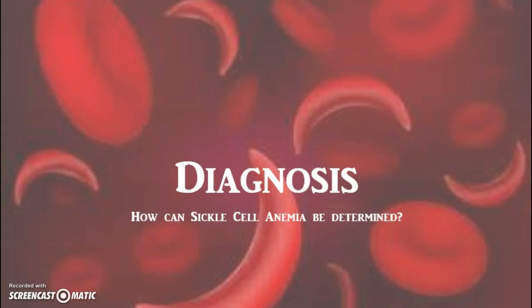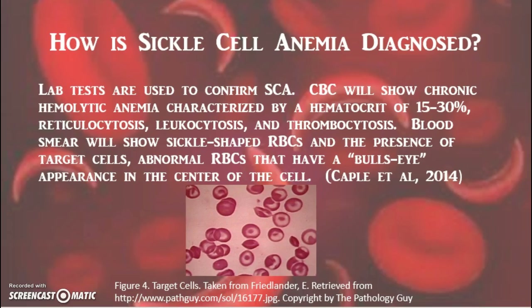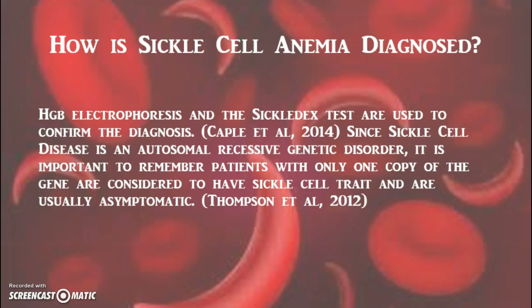How can sickle cell anemia be determined? Sickle cell anemia is diagnosed through lab results and the appearance of specific target cells under a microscope. Figure 4 shows examples of target cells — abnormal RBCs that have a bullseye appearance in the center of the cell. Hemoglobin electrophoresis and the sickle-dex test are also ways sickle cell anemia is diagnosed.